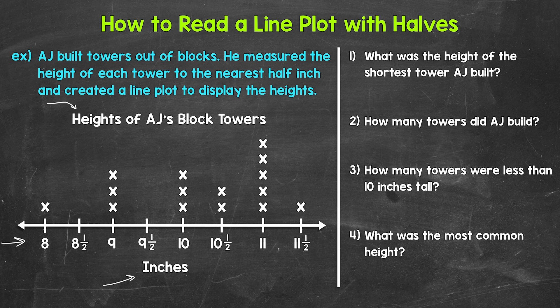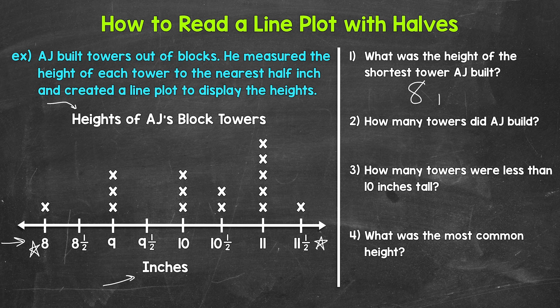Each X represents a tower. For example, if we look at eleven and a half, we have one X above that, meaning one tower was eleven and a half inches. Question one: what was the height of the shortest tower AJ built? We need the smallest number on the number line with at least one X above it. That's eight inches — the shortest tower AJ built was eight inches.